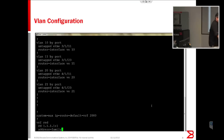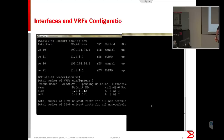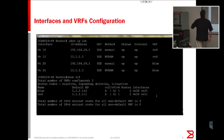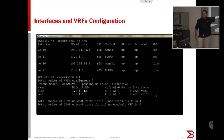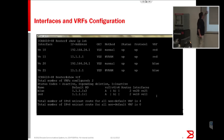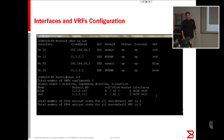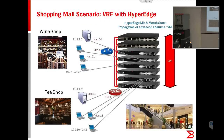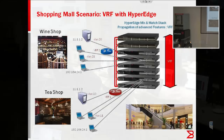VLAN 10 and 11 are routed through the red VRF instance, as you can see in the last column, and VLAN 20 and 21 are routed through the blue VRF instance.